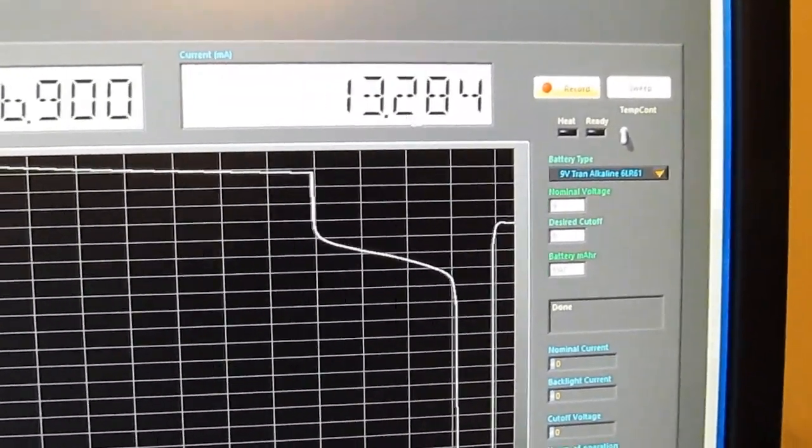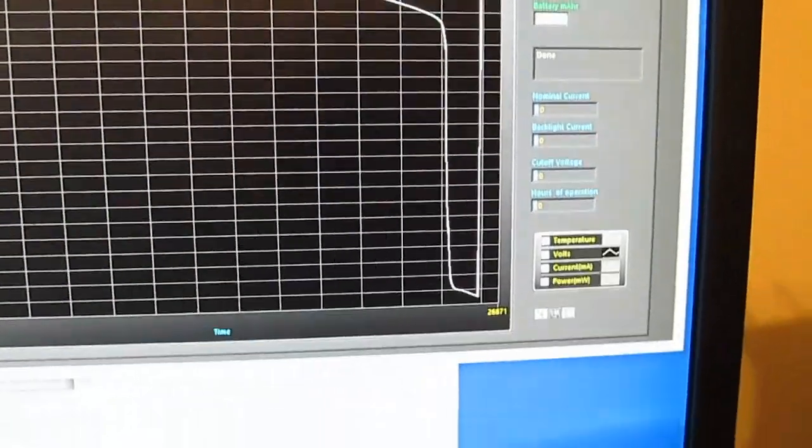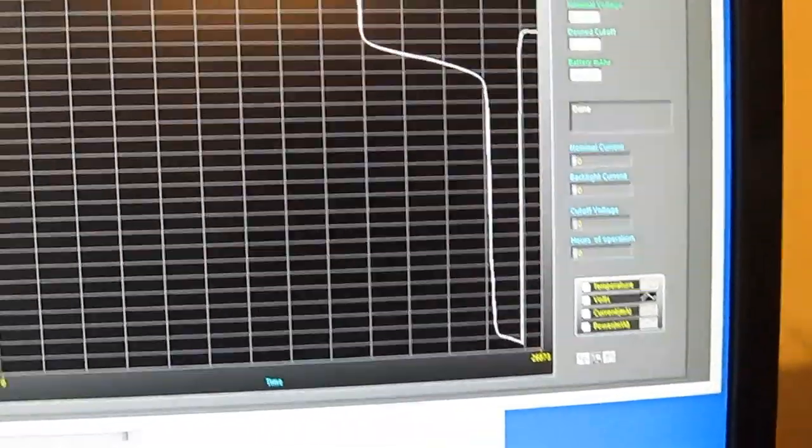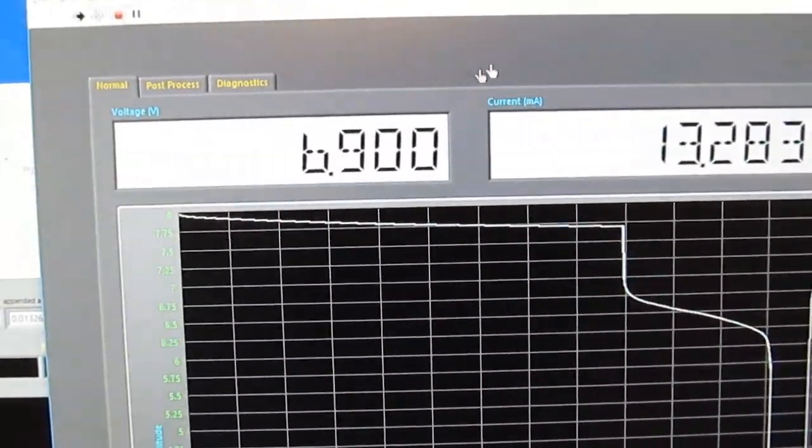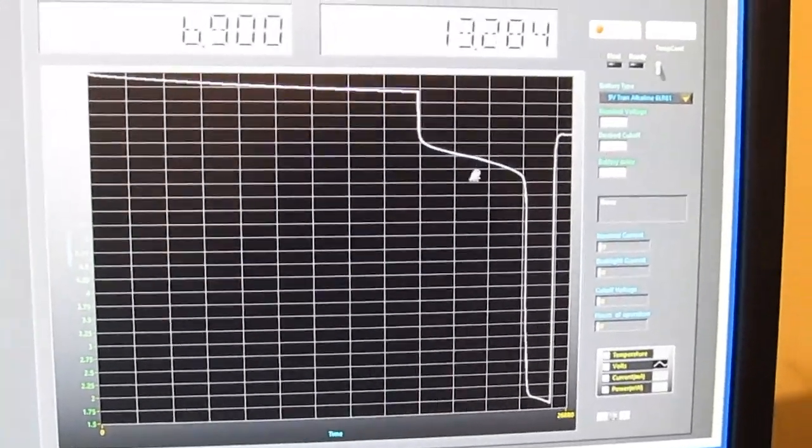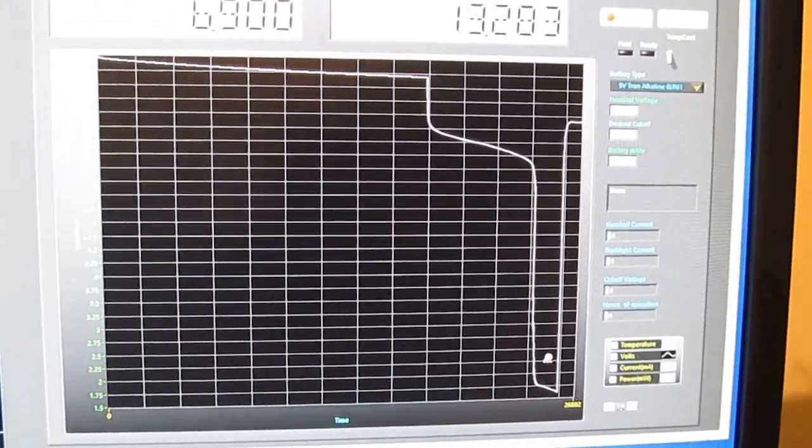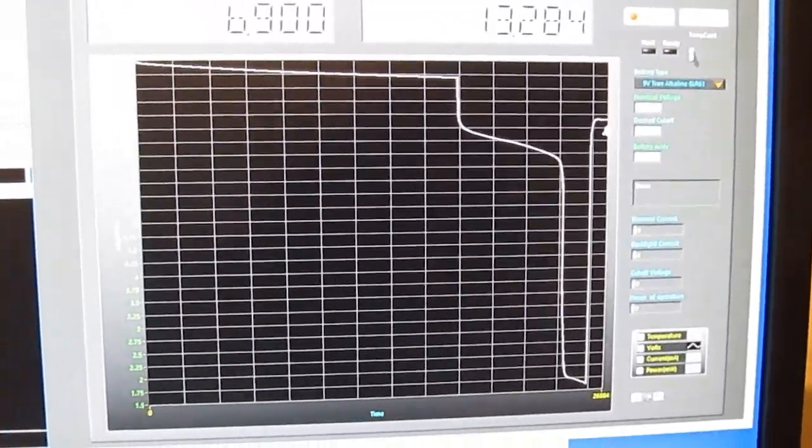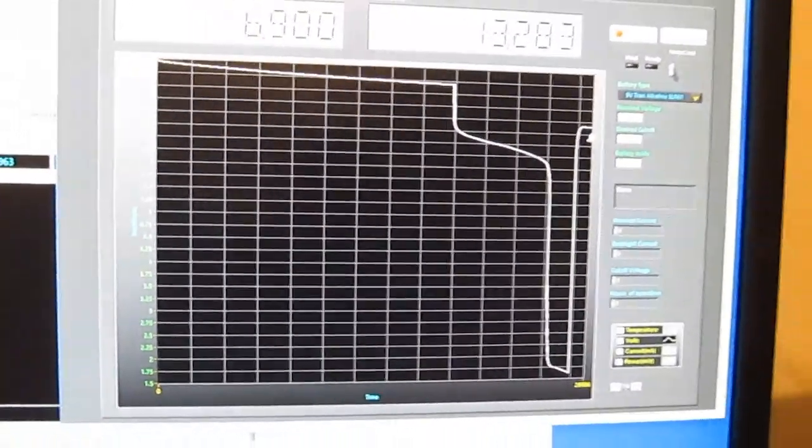I'm still pulling about 13 milliamps out of this battery right now, about 13.3, and the battery voltage is currently 6.9 volts. So I suspect that this battery, even going through this abuse, is probably still charged enough where it could run my UT61E even with the modifications.